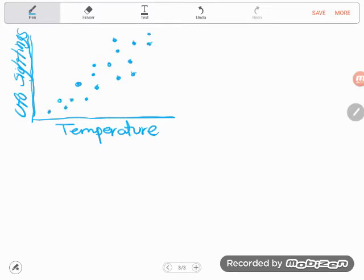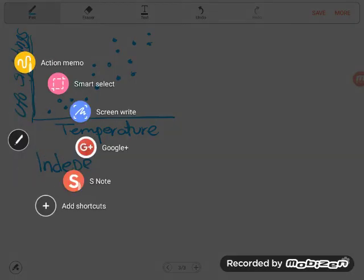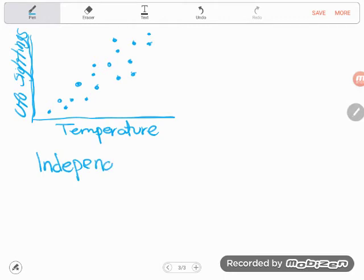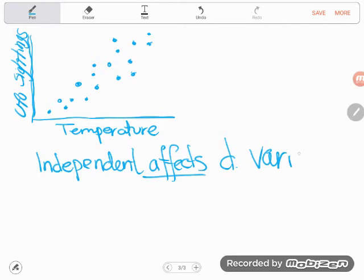Let me say that again: the hotter the temperature gets, the more people are seeing UFOs. And so the interesting thing here is if I want to identify which one is the dependent variable and which one is the independent variable, again I can remember that little phrase - the independent variable affects - because that one always affects the dependent variable. The dependent variable depends on the other, or the independent variable affects the dependent variable.